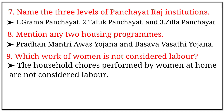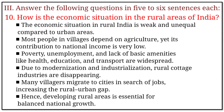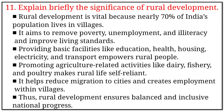Question 3: Answer the following in five to six sentences each. 10. How is the economic situation in the rural areas of India? Answer: The economic situation in rural India is weak and unequal compared to urban areas. Most people in villages depend on agriculture, yet its contribution to national income is very low. Poverty, unemployment, and lack of basic amenities like health, education, and transport are widespread. Due to modernization and industrialization, rural cottage industries are disappearing. Many villagers migrate to cities in search of jobs, increasing the rural-urban gap. Hence developing rural areas is essential for balanced national growth.